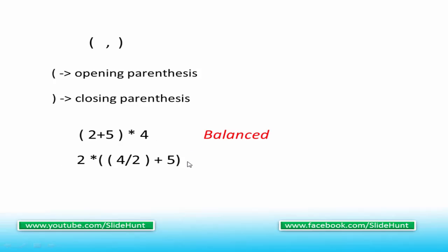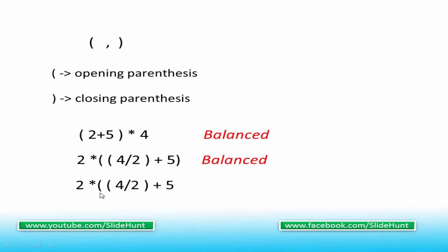Now consider this expression. This expression has two opening parenthesis and two closing parenthesis, so this expression is also balanced. Let's see another example. For this example, the number of opening parenthesis is two and the number of closing parenthesis is one. They are not equal, so this expression is unbalanced.